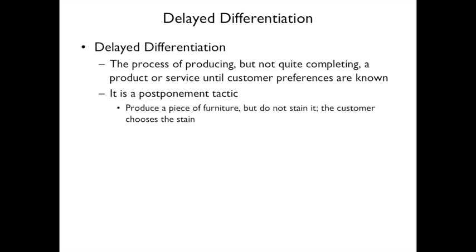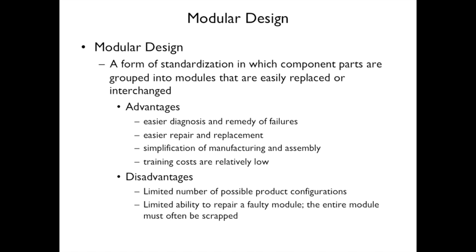One method of mass customization is delayed differentiation — you have the product almost done and then customize it at the end. One example: a piece of wood furniture is produced but not stained; the customer chooses the stain. Another example: a builder constructing a spec house will often wait on the carpet and wall colors — depending on where they are in the process, the customer can upgrade the carpet or change other finishes. That's delayed differentiation.